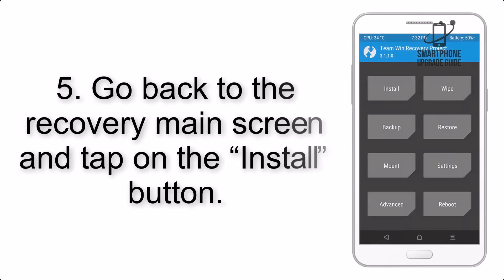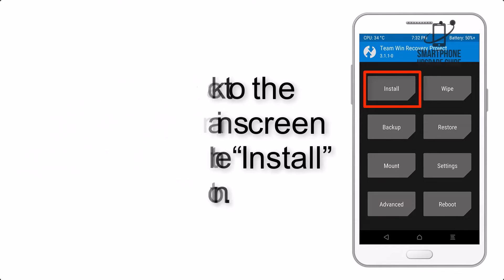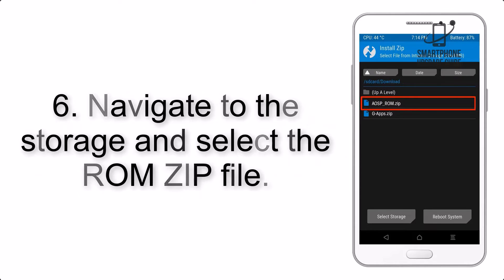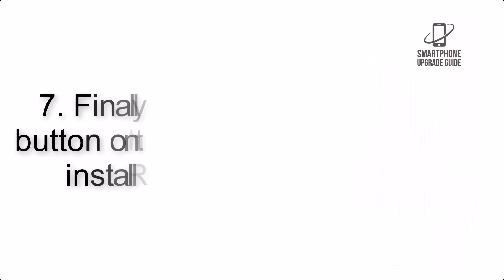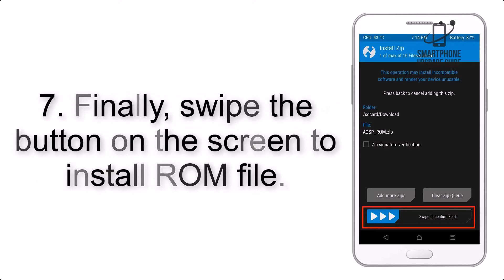Step 4: Swipe the button to wipe the device. Step 5: Go back to the recovery main screen and tap on the Install button. Step 6: Navigate to the storage and select the ROM zip file.